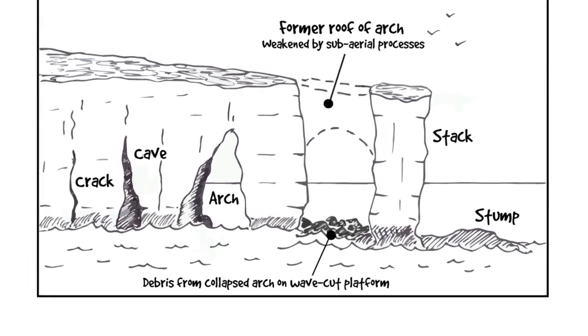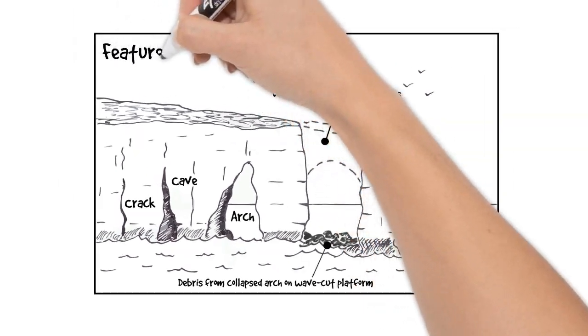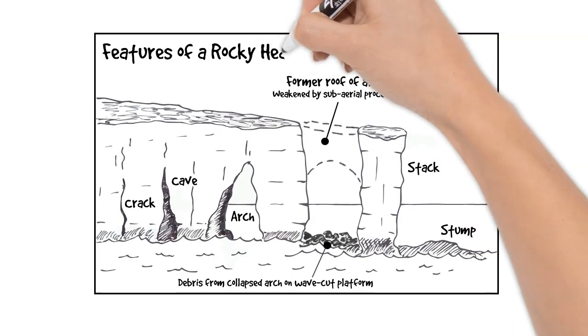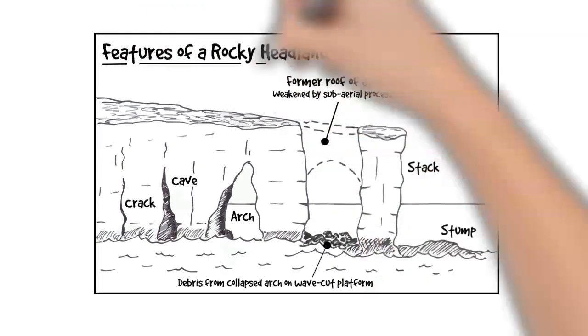So our diagram is pretty much finished now. Of course, we've got to add a title, features of a rocky headland and underline it.